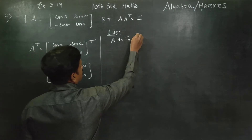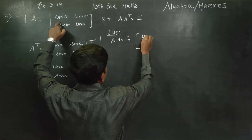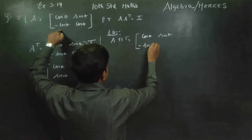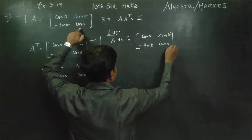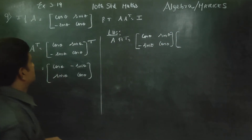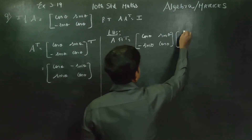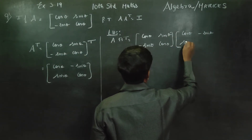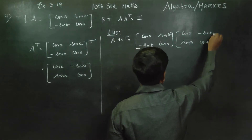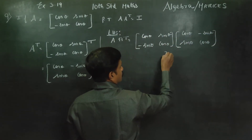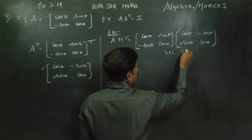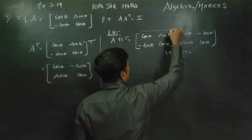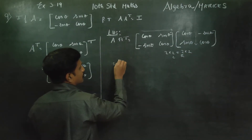Then A into A transpose equals A matrix multiplied by A transpose. A is [[cos theta, sin theta], [-sin theta, cos theta]] and A transpose is [[cos theta, -sin theta], [sin theta, cos theta]]. Both are 2x2 matrices, so columns equal rows and matrix multiplication is valid. We multiply row into column.